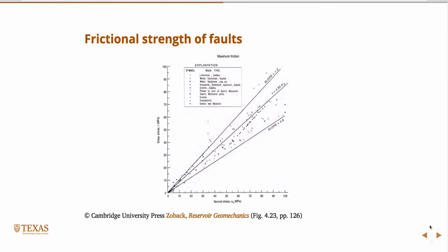In this class, if I don't give you a value for friction, just use 0.6. I'll try to always give you a value, but if for some reason I don't, just use 0.6. It's sort of a rule of thumb.